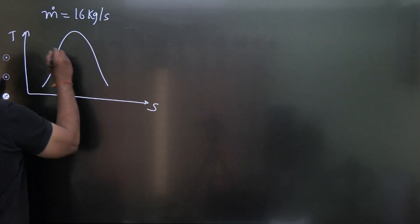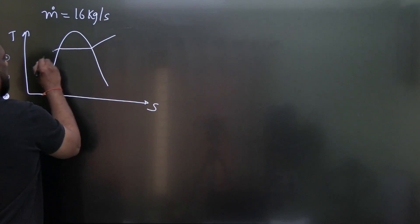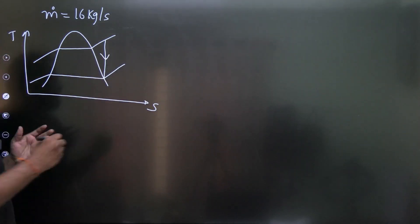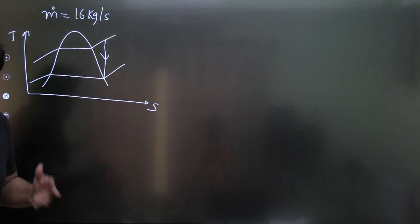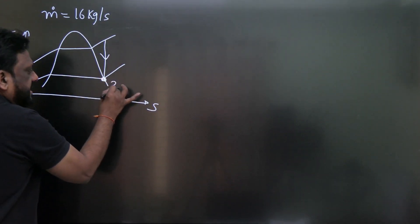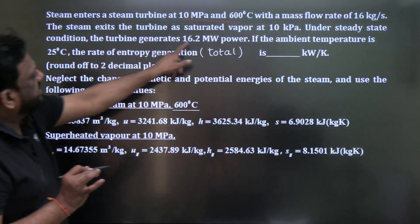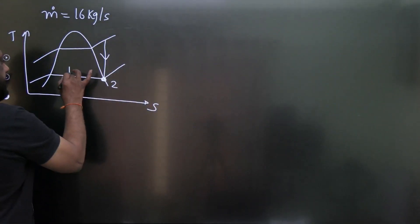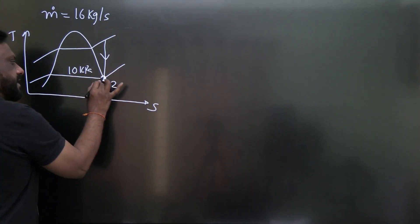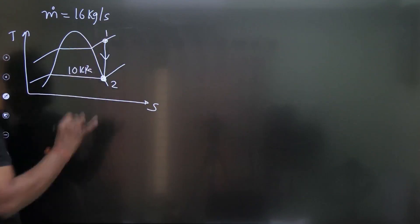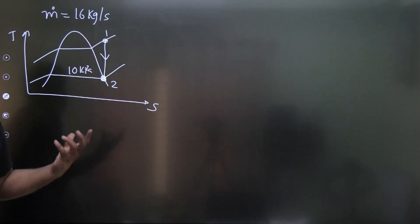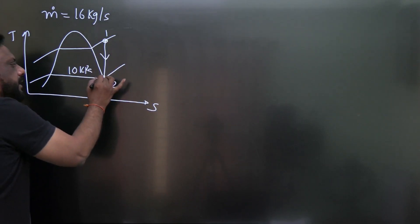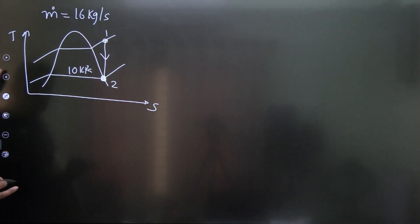On a T-S diagram, the entry is on a constant pressure line. It may be reversible or irreversible — he has not specified. The exit is saturated vapor at 10 kilopascal. This is the entry point, and the exit point is on the saturated vapor curve, so the dryness fraction at exit is 1.